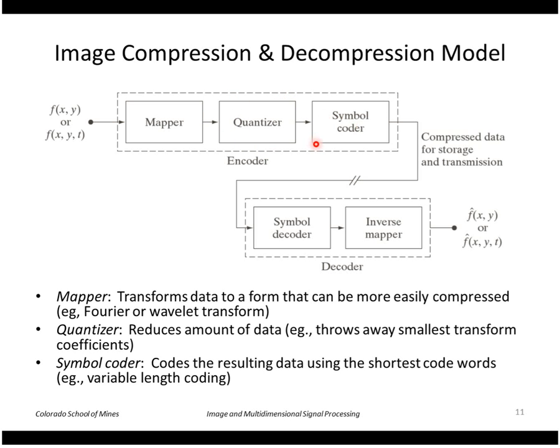Then we take the reduced data and we pass it through a symbol coder. And this is something that will use the shortest possible code words to store the remaining coefficients. So that's our compressed result.